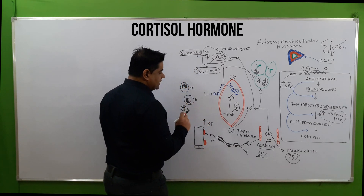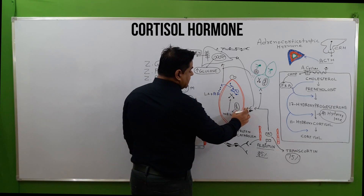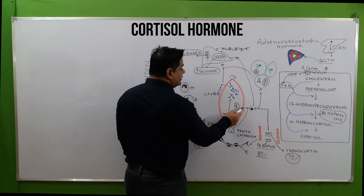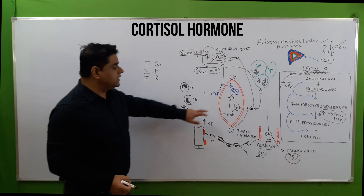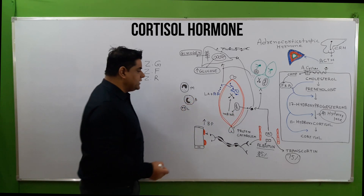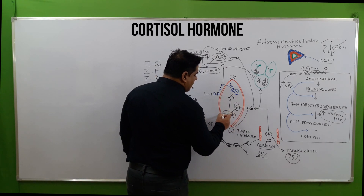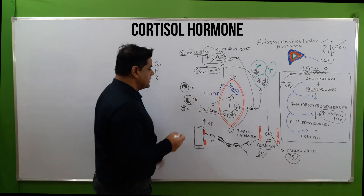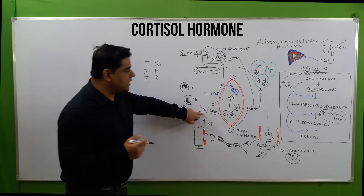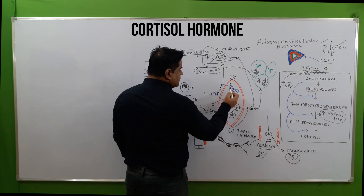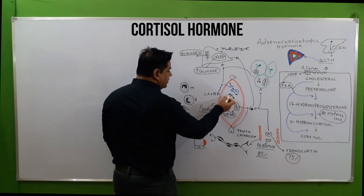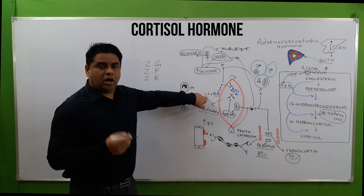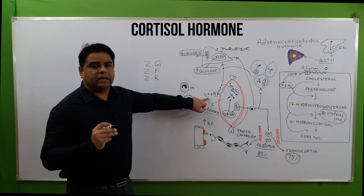Muscles have receptors for cortisol. When cortisol binds on muscle cells, it stimulates the nuclear machinery of the myocyte to produce new mRNA proteins called proteases. These are cutter enzymes that cut the proteins present in muscle cells, converting them into amino acids. The muscles also produce lactic acid in this process.